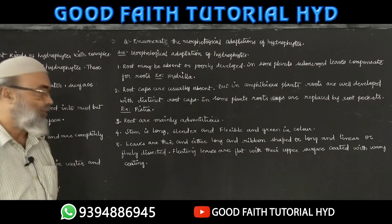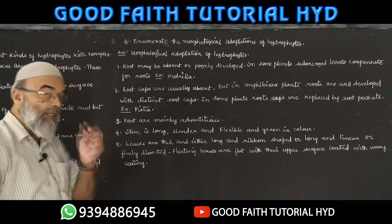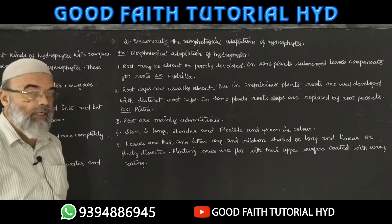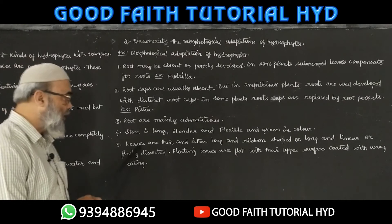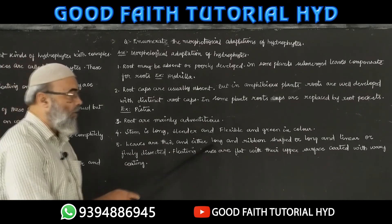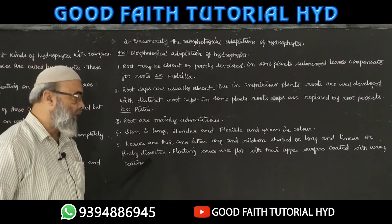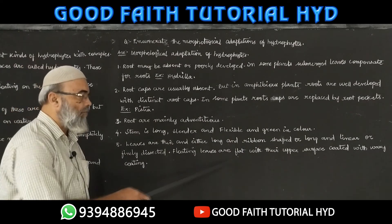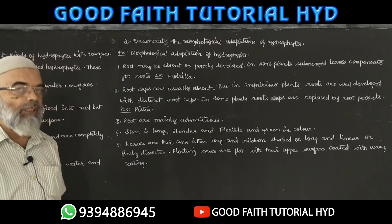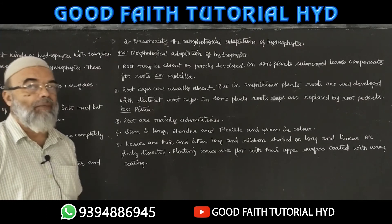Roots are mainly adventitious — tap root system is absent, only adventitious root system is found, unlike terrestrial plants. Stem is long, slender, flexible, and green in color, so it is photosynthetic along with the leaves. Leaves are thin, long, ribbon-shaped, linear, and dissected. Floating leaves are flat with their upper surface coated with a waxy coating to reduce transpiration.